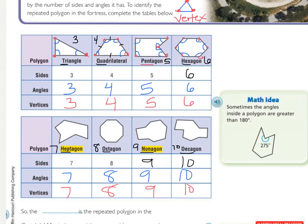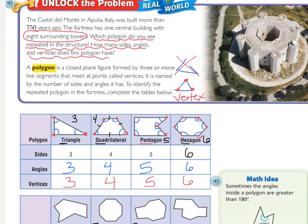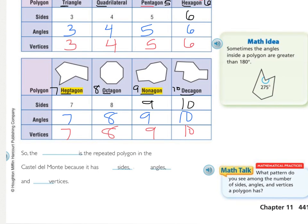Now remember, looking at our picture, it had eight surrounding towers — one at each point where the straight lines come together. So what is the repeated polygon? It is the octagon, because it has eight sides, eight angles, and eight vertices. Something to notice here: the number of sides, angles, and vertices are always the same, and it's based on their prefix. So 'deca' ten has ten sides, angles, and vertices.